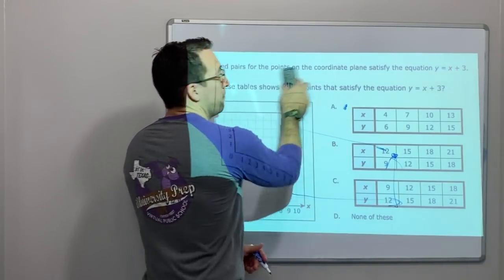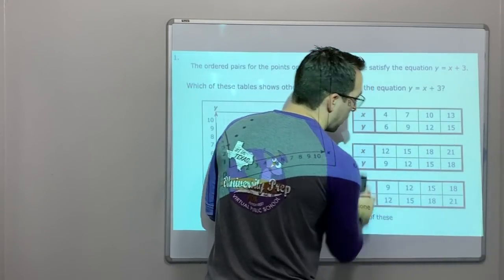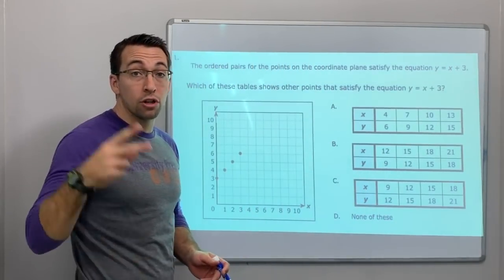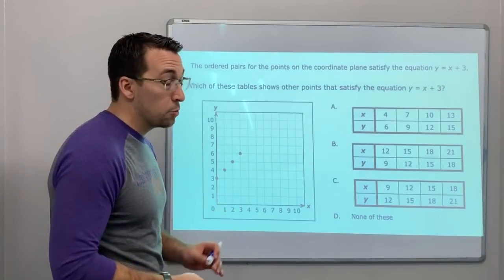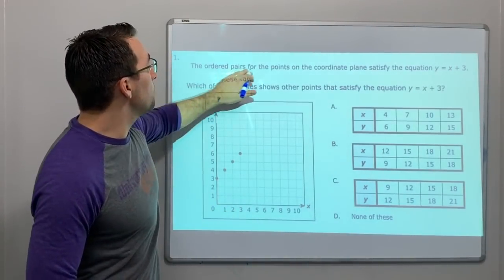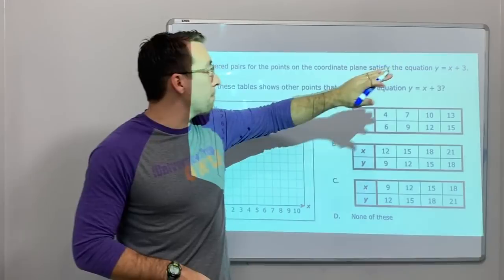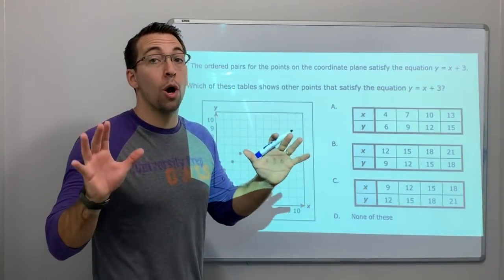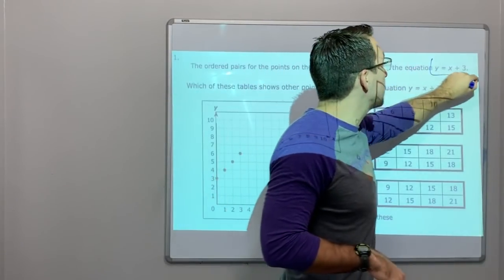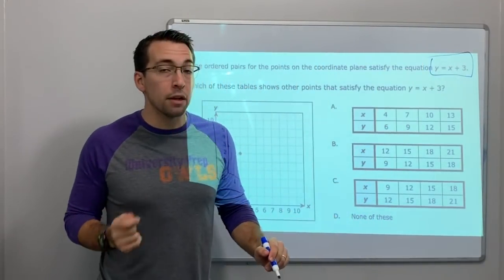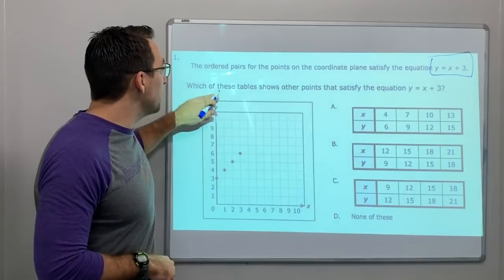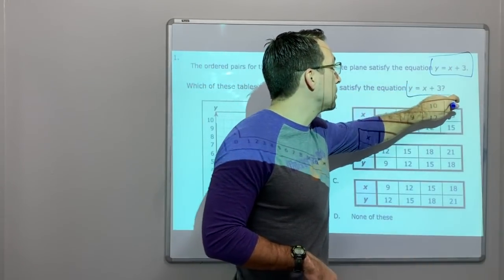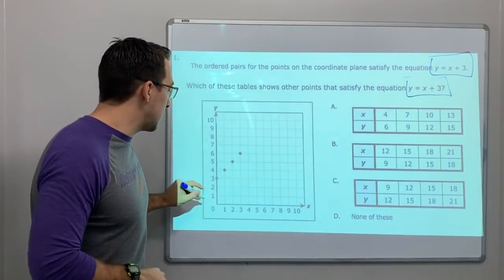So for this video, we're only going to do two problems because they're going to be kind of in-depth. And then the next video, we're going to do two more problems. So two problems is it. The ordered pairs for the points on the coordinate plane satisfy the equation y equals x plus 3. Here is the pattern that we're trying to talk about. y equals x plus 3. Which of these tables shows the other points that satisfy the equation y equals x plus 3? Look at this. We're going to break these points down.